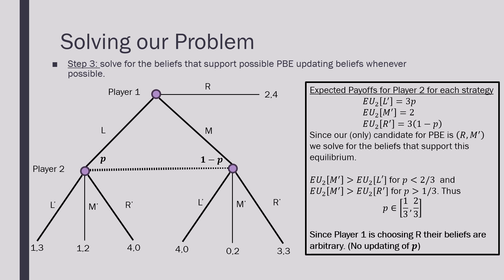And the expected payoffs from playing left, middle, and right are going to be as follows: 3p, 2, and 3 minus 1p.